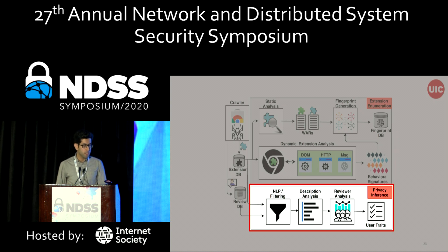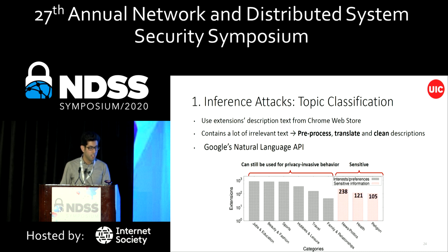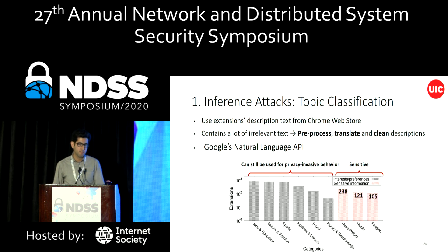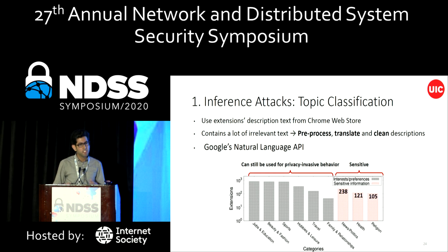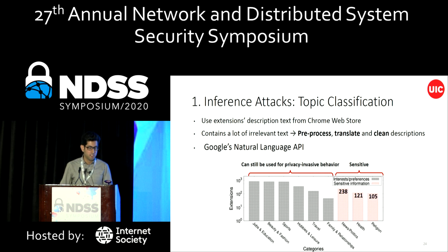The next module infers sensitive information from detected extensions. We have three classes of inference attacks. The first is classifying extensions by their descriptions — we preprocess, translate if not in English, and clean the descriptions to remove irrelevant text like changelogs. We then use the Google NLP API to classify them. Some classes, shown in red, can reveal sensitive information about the user. Gray classes reveal user interests, which, while less sensitive, can still be used for privacy-invasive behaviors such as targeted advertising.